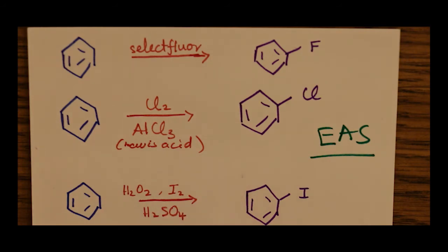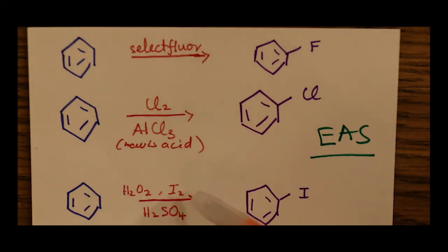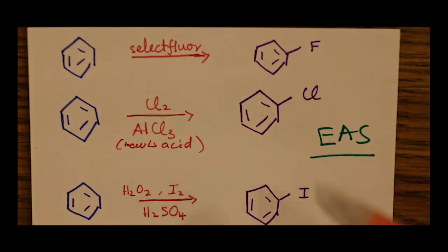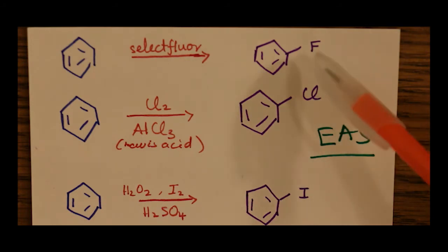The same thing happens: the fluorine, chlorine, and iodine split off, and one of them becomes the electrophile, which is substituted on the ring. In iodine, as I said, we have iodination. In chlorine, it's called chlorination. And in fluorine, fluorination.